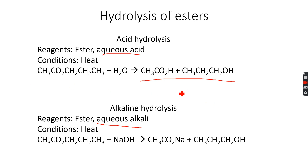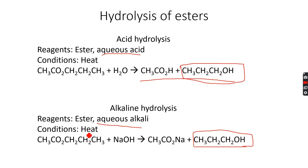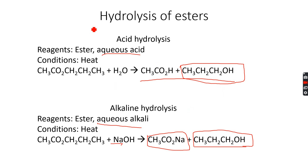So acid hydrolysis is basically the opposite of esterification. In alkaline hydrolysis, even though we get the same alcohol that formed the ester, instead of the carboxylic acid we get a salt of the carboxylic acid because we are using NaOH. The Na⁺ ion bonds with the carboxylate ion to give sodium ethanoate in this case. This is the key difference between acid hydrolysis and alkaline hydrolysis of esters.